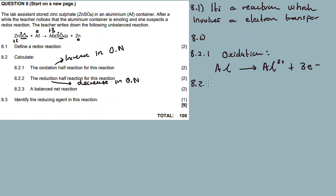Question 8.2.2: Reduction. Reduction is for zinc. The oxidation number of zinc changes from plus two to zero, so zinc gains two electrons.